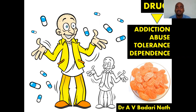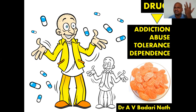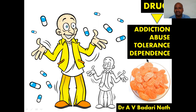One clarification: drug addiction and drug dependence are almost the same — no need to read them separately. Both start with double-D: 'addiction' has a D and 'dependence' has a D. So drug addiction and drug dependence are both 'DD.' You cannot find the letter D in 'abuse' or 'tolerance,' so those are different.